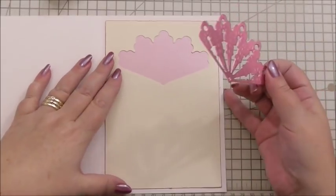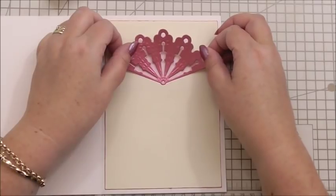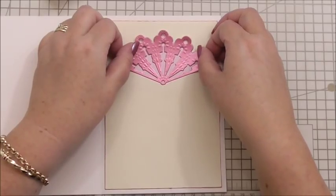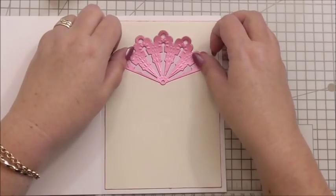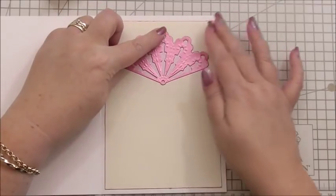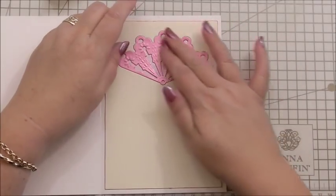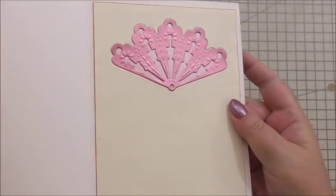So this is the actual die for the fan, and now I'm going to pop it into the aperture that we've cut, like so. And then I'm going to press it down so we can see behind it the pink metallic card.